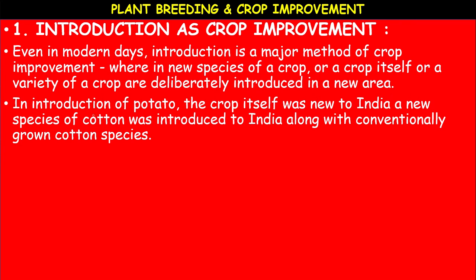For example, in the introduction of potato, the crop itself was new to India. A new species of cotton was introduced to India along with conventionally grown cotton species. Examples for this introduction are potato and cotton. Introduction brings in new potentialities of crop production.